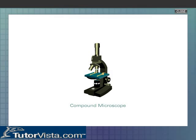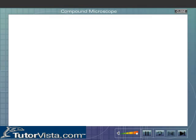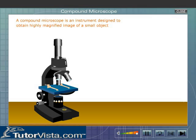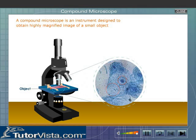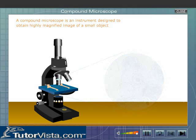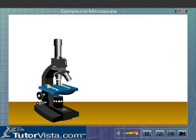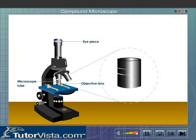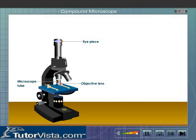A compound microscope is an instrument designed to obtain a highly magnified image of a small object. A compound microscope consists of an objective lens, eyepiece, and a microscope tube.